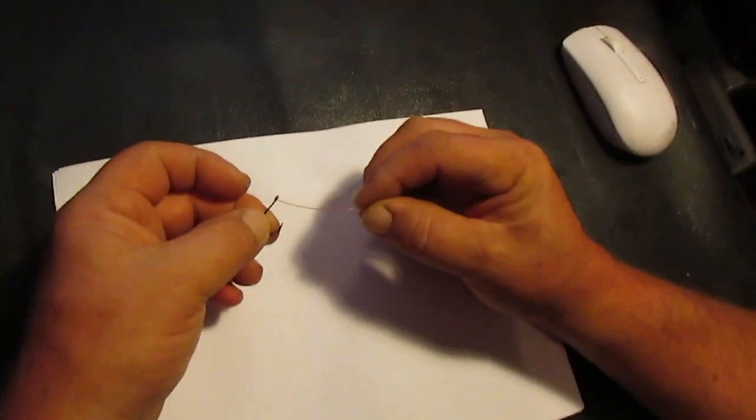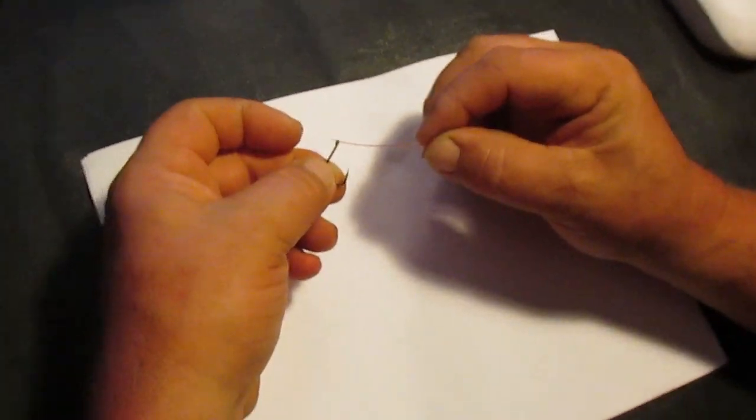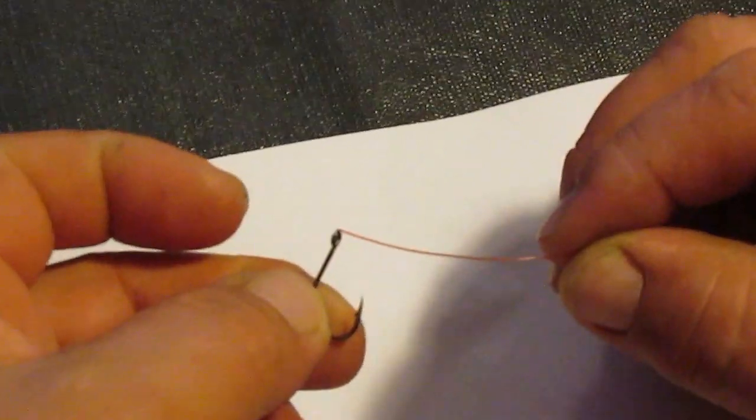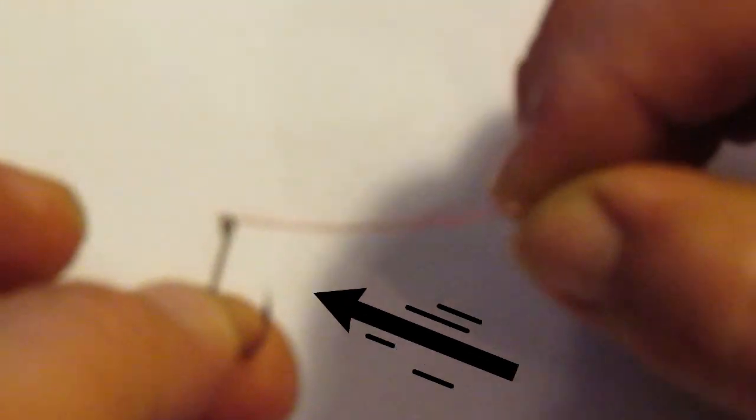You're gonna put it from front to back through the little hole, and just like doing a barrel knot, once that tail goes through, we're gonna twist it five or six times around.